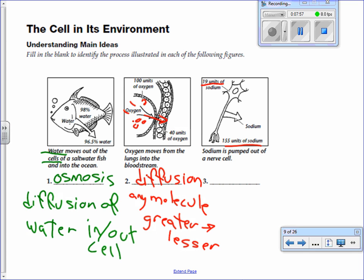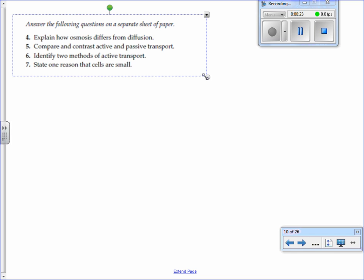And active transport is something that's really important for cells because sometimes you need to move molecules against the way they would naturally move. Okay, so let's look at a couple quick things here on this next section. So osmosis versus diffusion. And again, this is an important question we talked about this week. We just talked about it on the other sheet of paper, right?